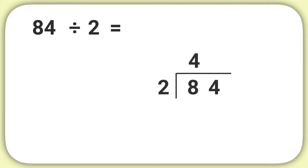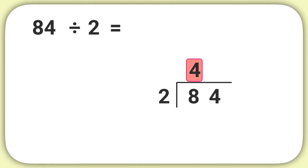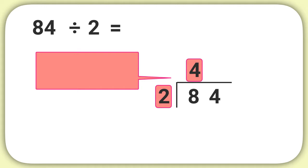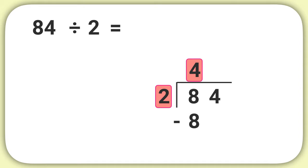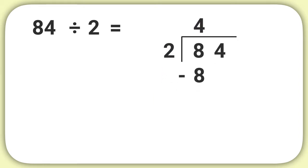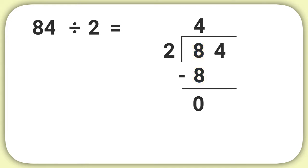Then the next step will be to multiply this 4 by 2. We think in our heads: 4 times 2 equals 8, and can write minus 8 into our problem. From there we need to subtract — we solve 8 minus 8 and write that it equals 0. Then we draw this arrow and bring the next digit, the 4, down.